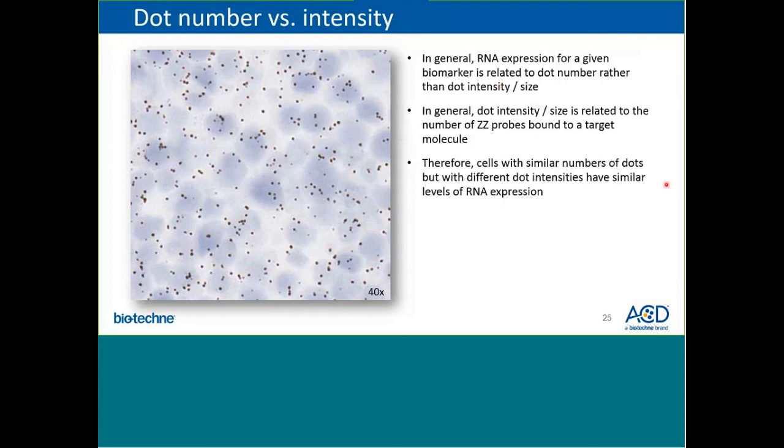In general, RNA expression for a given biomarker is related to the dot number rather than the dot intensity or size. Again, in general the dot intensity is related to the number of double Z probes bound to a target molecule. As a result, cells with similar numbers of dots but with different dot intensities or sizes have similar levels of RNA expression.